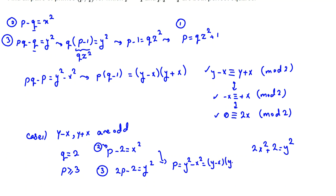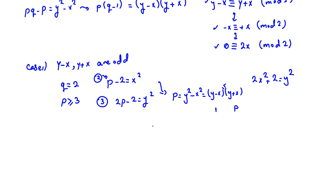Without loss of generality, suppose P, X, Y are non-negative. Then Y plus X is positive (if it were 0, the product would be 0, giving P=0, a contradiction). Since P is prime, the only factorization is Y minus X equals 1 and Y plus X equals P. Subtracting gives 2X equals P minus 1, so X equals (P minus 1) over 2.